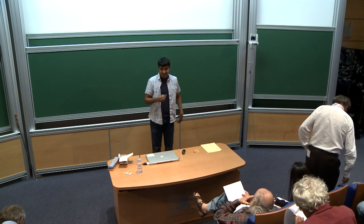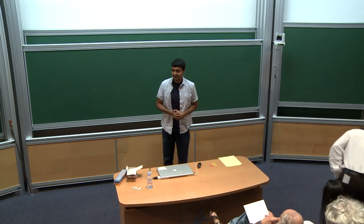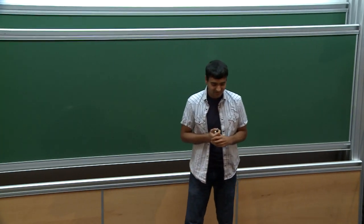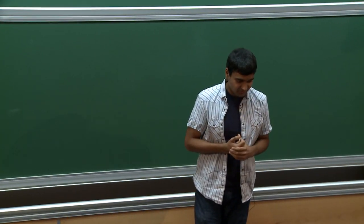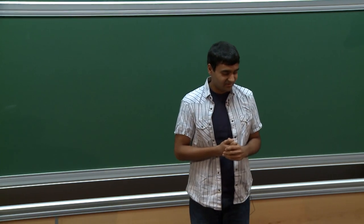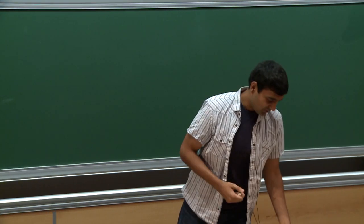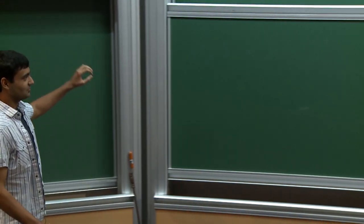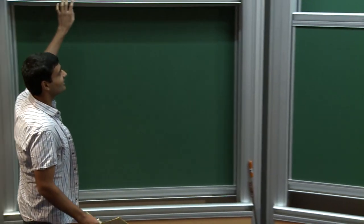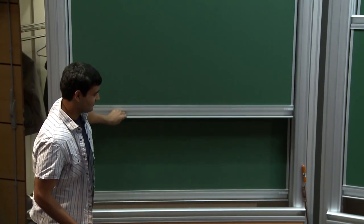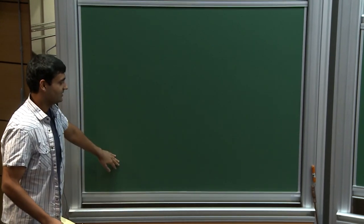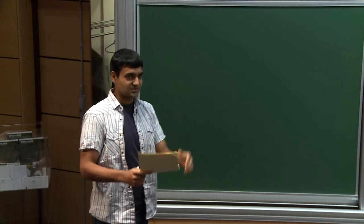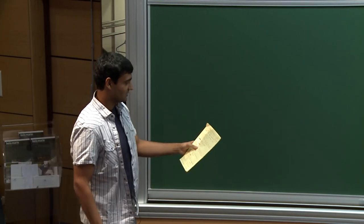Thank you for the introduction and very much for the invitation to speak here. It's a really great honor for me to be speaking at this conference in honor of Arthur. One of my favorite theorems from when I was a graduate student is the theorem in chapter eight of Berthelot-Ogus. What I want to explain today is some joint work with Matthew Morrow and Peter Schultz, which really uses the construction in chapter eight of Berthelot-Ogus in a crucial way.